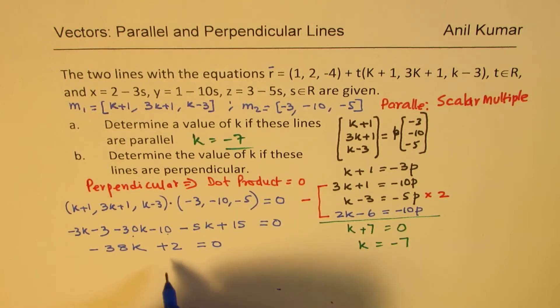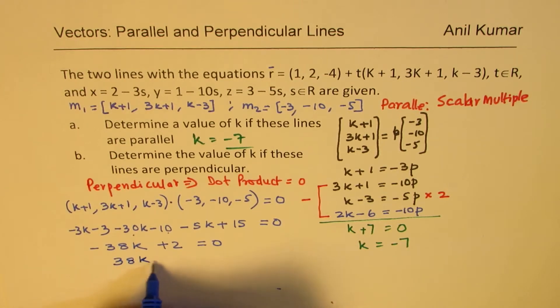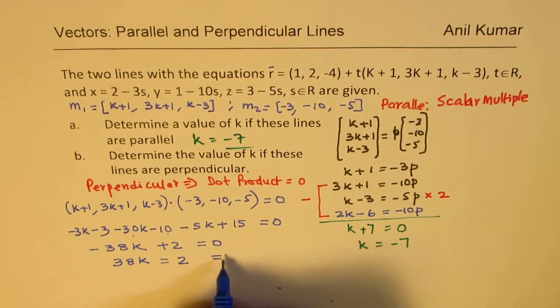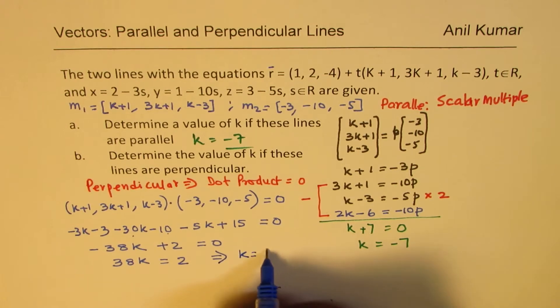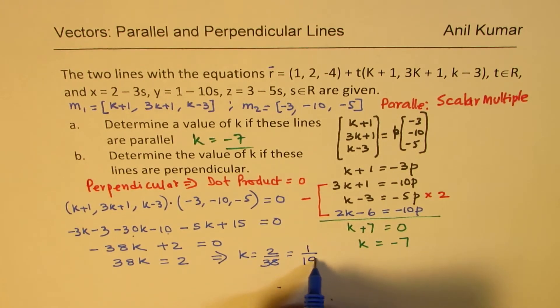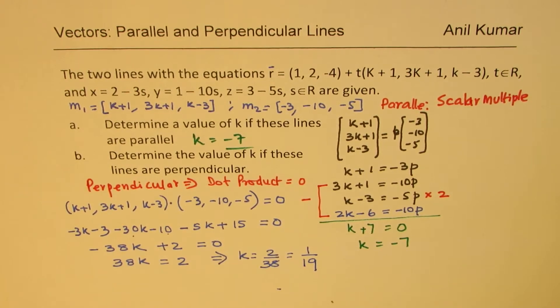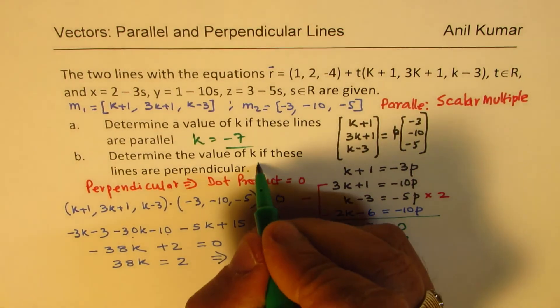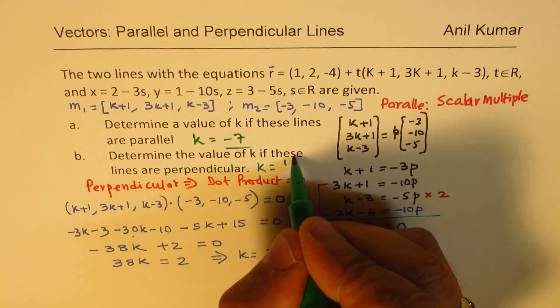So that gives you -38k + 2 = 0, which means 38k = 2. That gives you k = 2/38, which is 1/19. So the answer for the second one is k = 1/19.